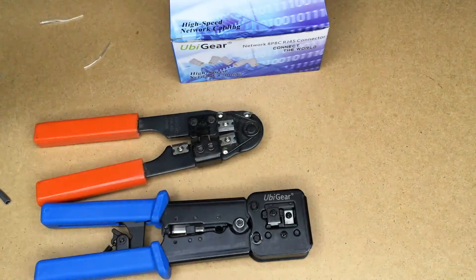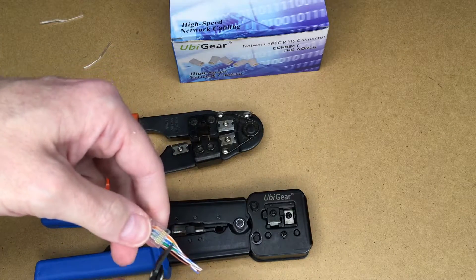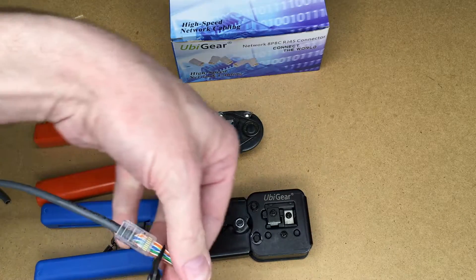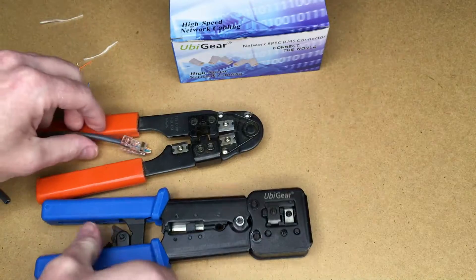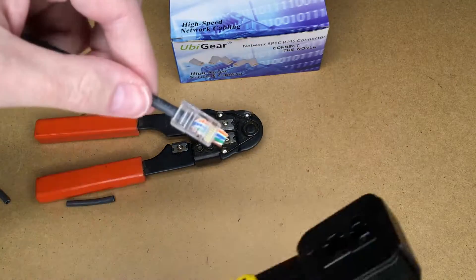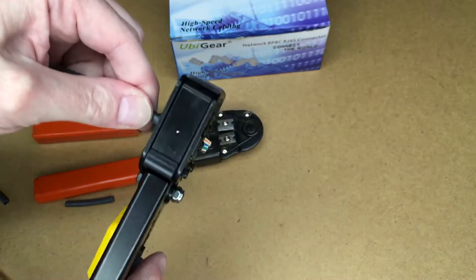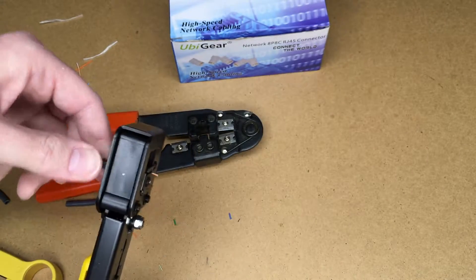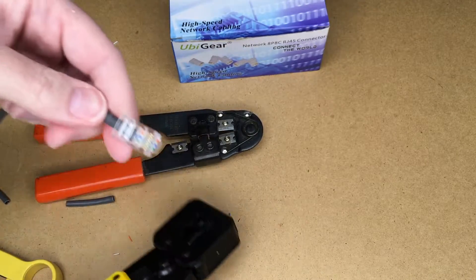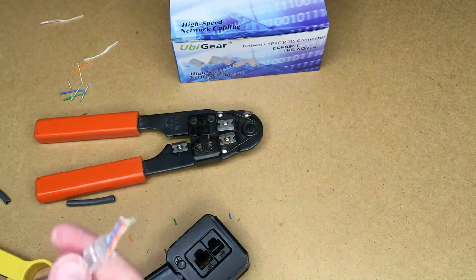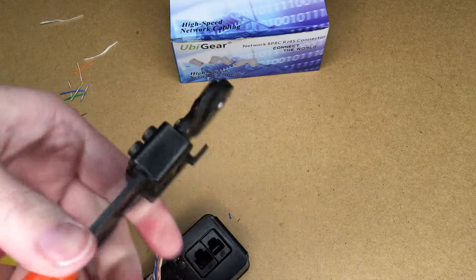Okay, I have two connectors ready to crimp, so I'm just going to cut these down a little bit. Then I'll stick it in the UbiGear crimper. There we cut it off, and then I'll stick it in my traditional crimper.